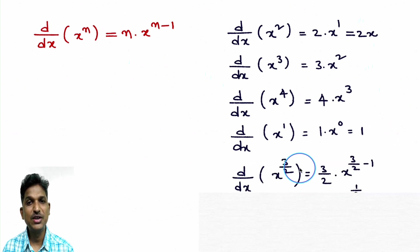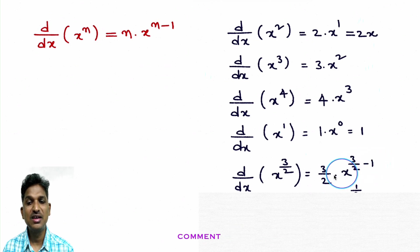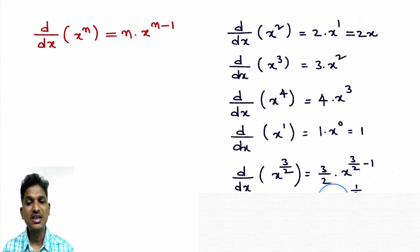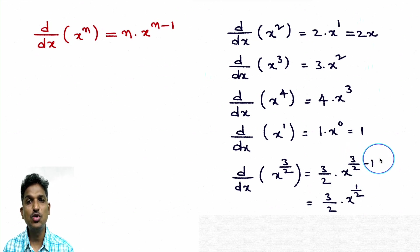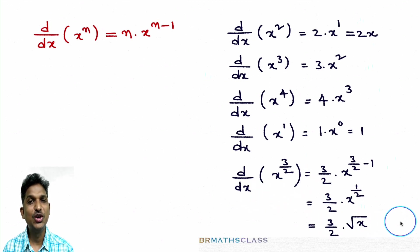Derivative of x power 3/2 — this also looks like x power n, so I'll apply the same formula. The answer is: 3/2 into x power 3/2 minus 1. Simplifying: 3/2 minus 1 equals 1/2 (since 2 is the LCM, numerator gives 3 minus 2 = 1). So x power 1/2 is root x. Therefore derivative of x power 3/2 is 3/2 into root x.